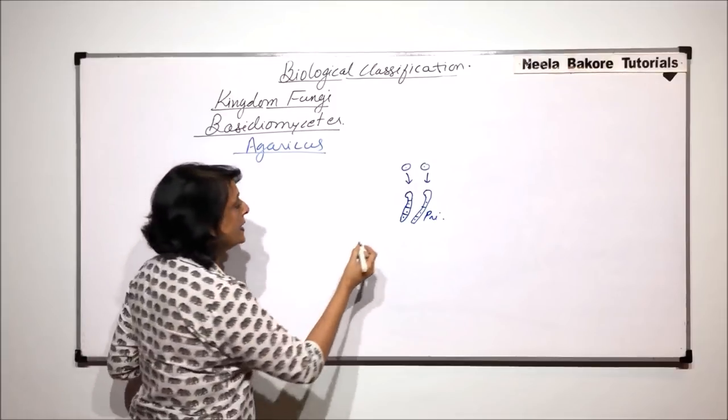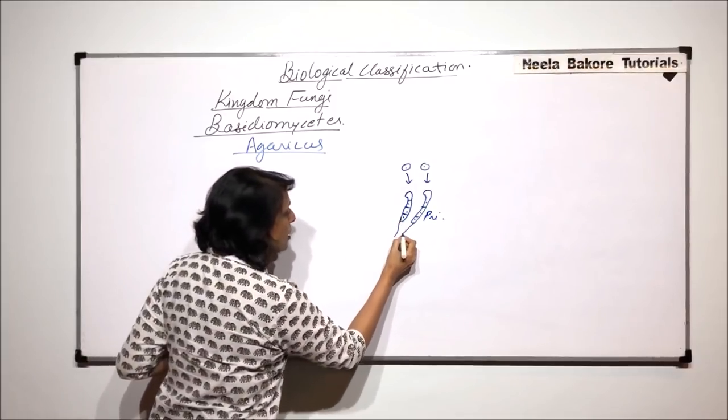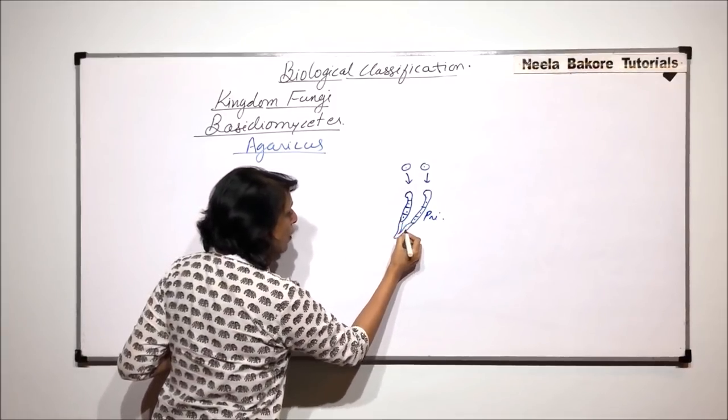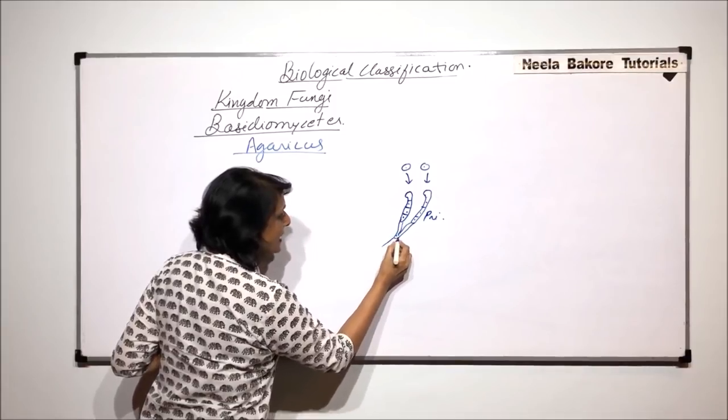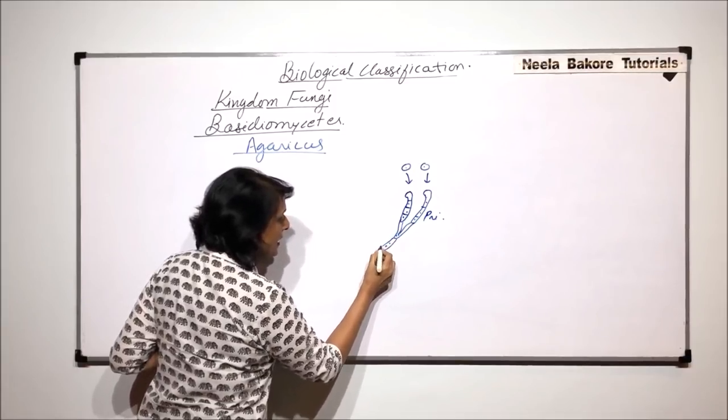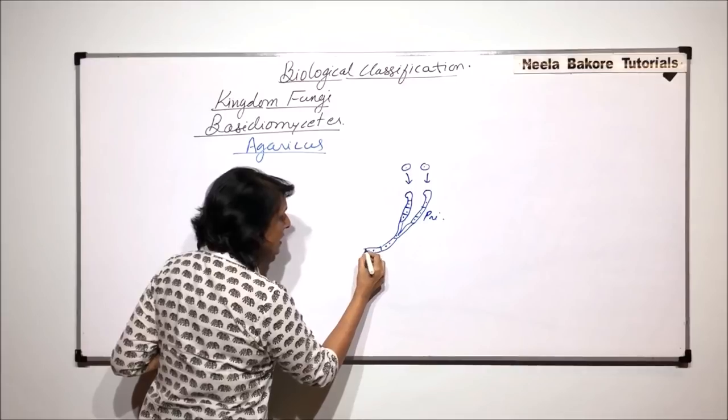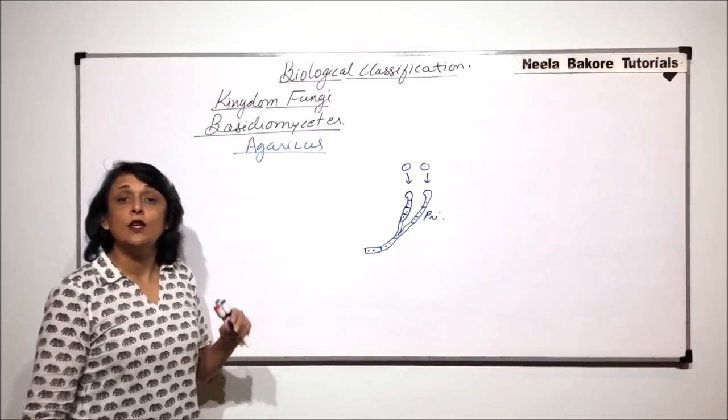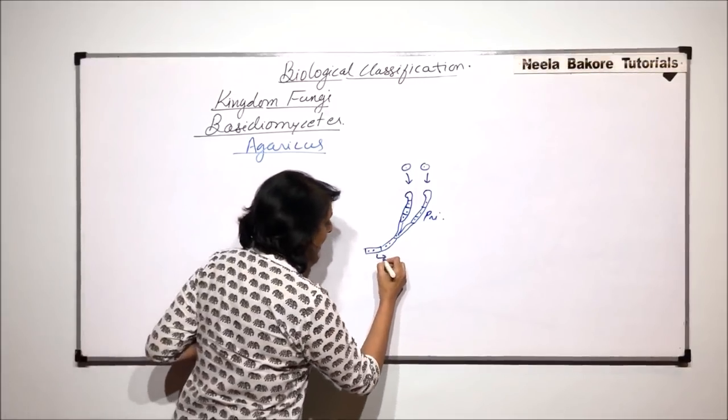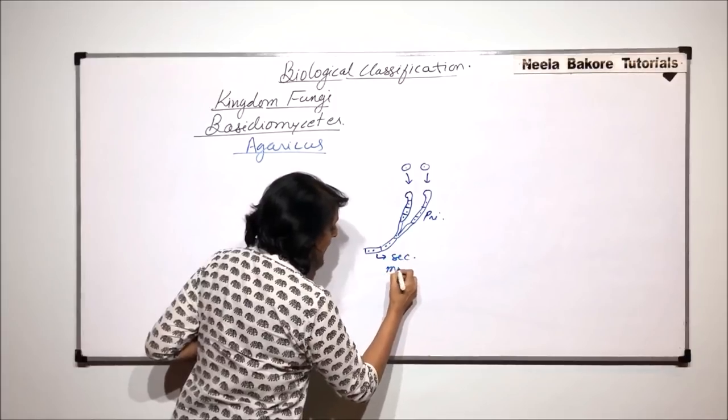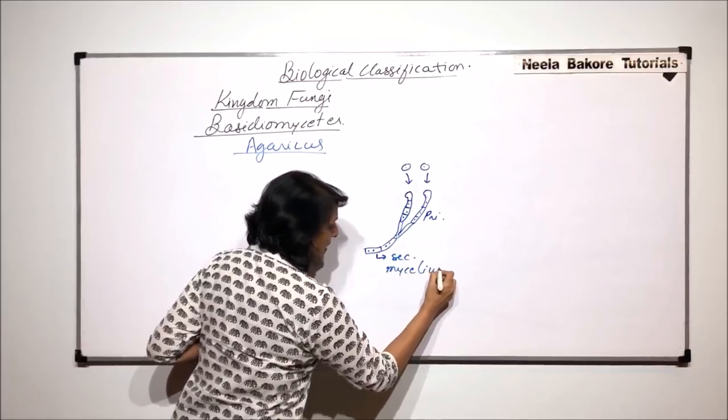Primary mycelia very soon fuse to form a dicharyonic mycelium. Dicharyonic means each segment is going to have two nuclei and this one is known as the secondary mycelium.